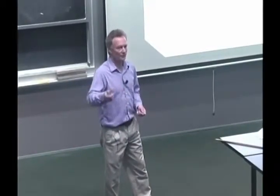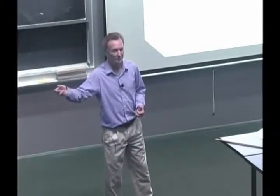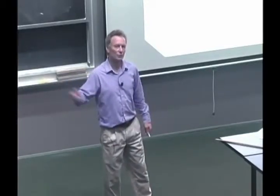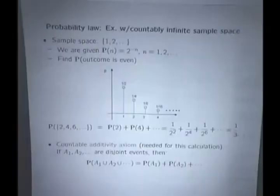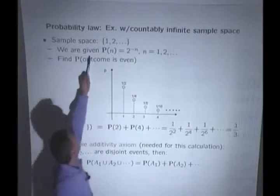What's the sample space of this experiment? You might have it happen in the first flip, it might happen in the tenth flip, heads for the first time might occur in the millionth flip. So the outcome of this experiment is going to be an integer and there's no bound to that integer. You might have to wait very much until that happens. So the natural sample space is the set of all possible integers.